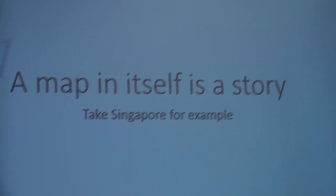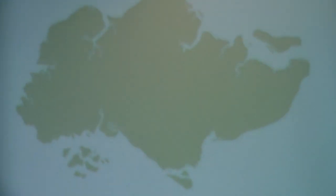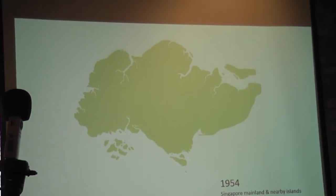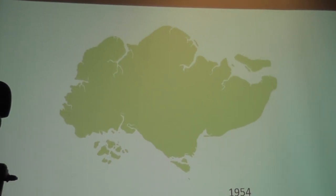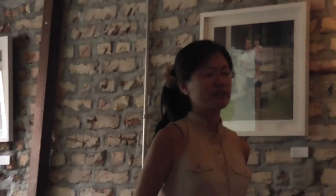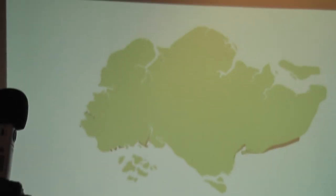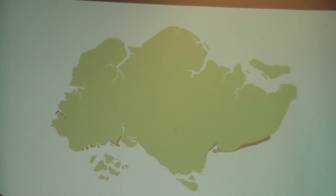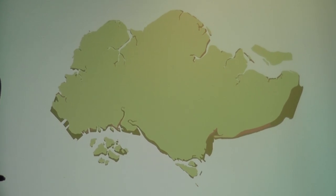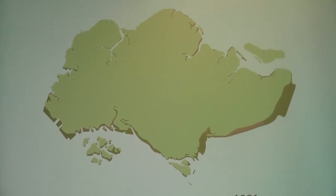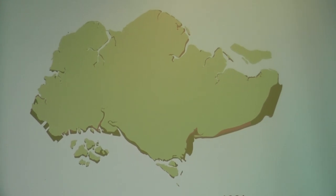So the map in itself is a story. What you're seeing here is something we've taken from an old map. Singapore recently released a lot of historical maps from the 1950s — this is how Singapore looked in the 1950s. About 20 years later it grew a little, especially on the southern side. And this is by the time I was born.